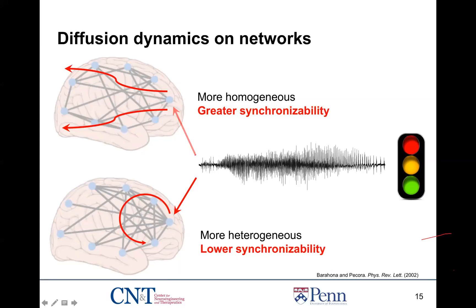One way that graph theorists have quantified the ability for diffusion to occur on networks is by measuring the synchronizability of the network, coined by Barahona and Pecora in 2002. It states that the more homogenous a network is, the greater the synchronizability, and the greater the synchronizability, the more amenable the network is to passing information from one node to all others. In a network with lower synchronizability, there is more localized passage of information. Mathematically, synchronizability is computed by taking the graph Laplacian and analyzing its eigenspectrum — specifically the eigenratio of the largest to the second smallest eigenvalues of that graph Laplacian.